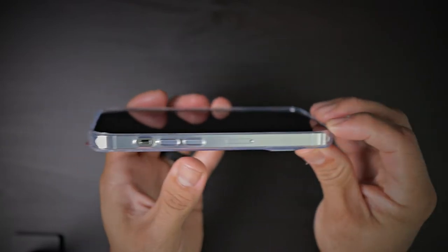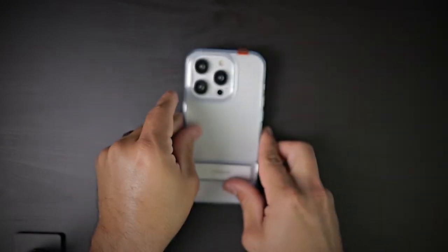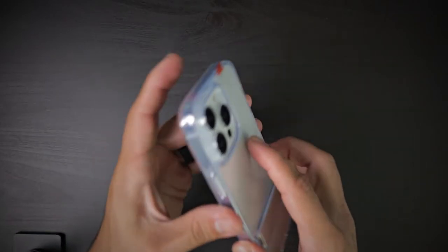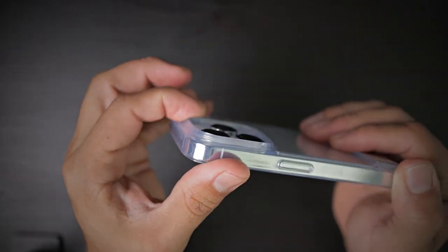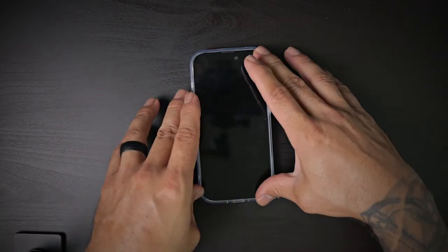You have a beautiful lip all around that screen so you're not going to scratch your screen if you lay it face down on a flat surface. You have the same lip protection around the camera on the back so you're not going to scratch it if you lay your phone on its back on a flat surface.